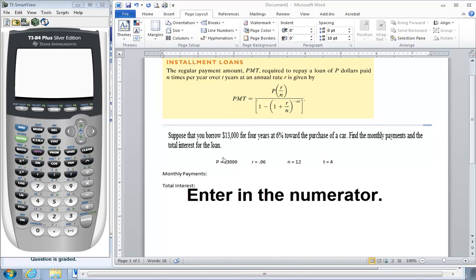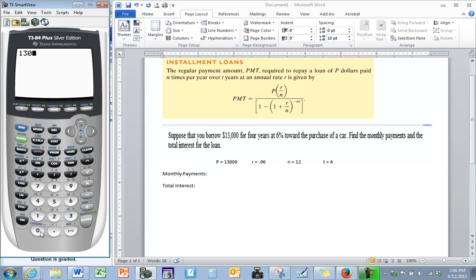In the calculator we want to enter the numerator first. So we will take 13,000 and multiply that by our interest rate .06 divided by N, our monthly payment is 12.